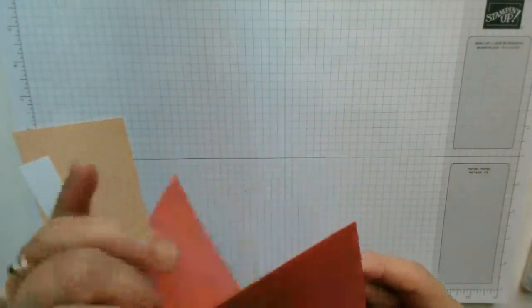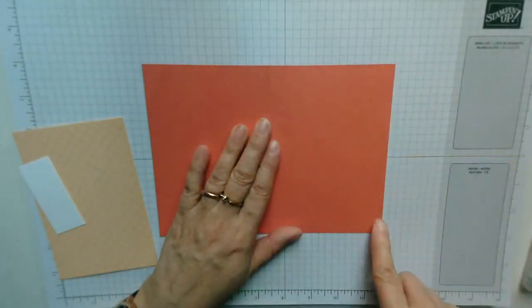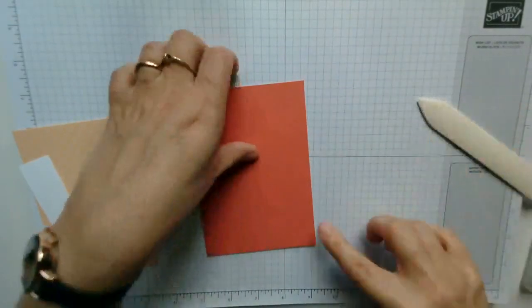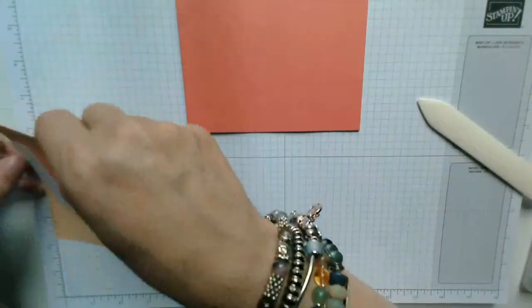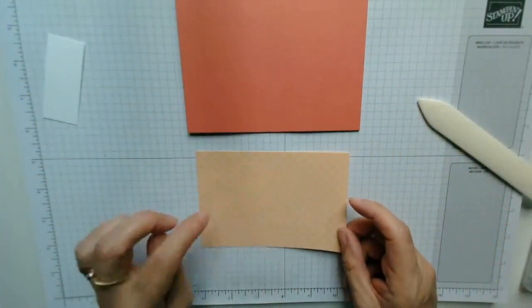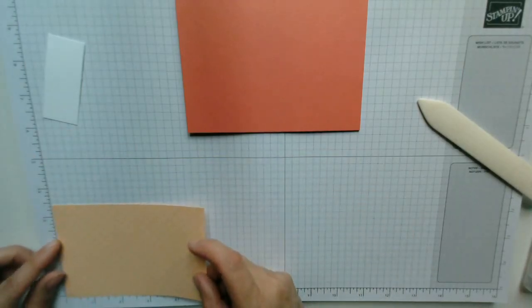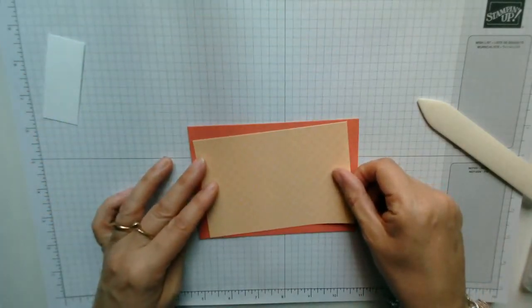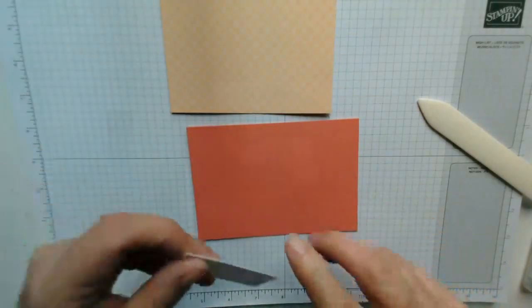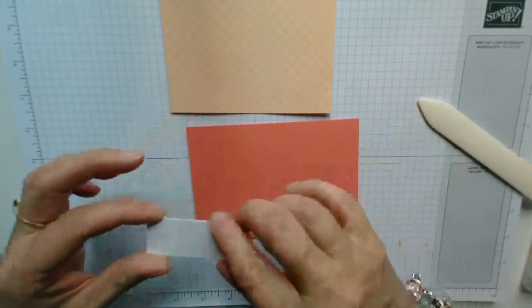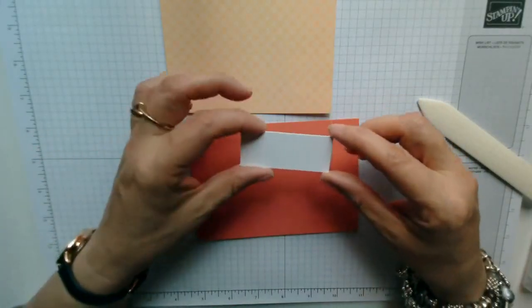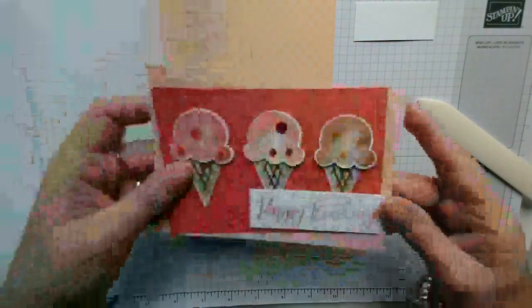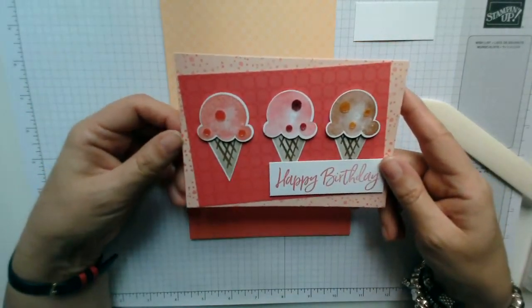Okay so the supplies for this morning are as follows. I have a piece of coastal cabana which measures eight inches by five and three quarters and I've scored it at the four inch mark and then burnished with my bone folder. I then have a piece of designer series paper in the new in colours and this is pale papaya and this measures three and a half by five and a quarter and will layer over the top of my base. We have a little one inch by two and a half inch sentiment piece of white cardstock for sentiment.